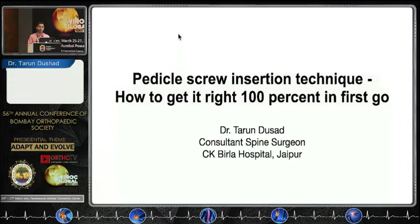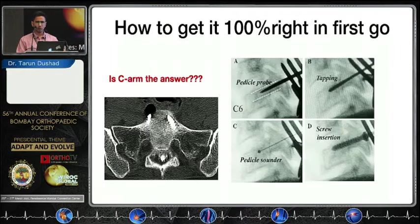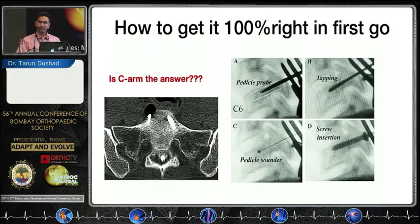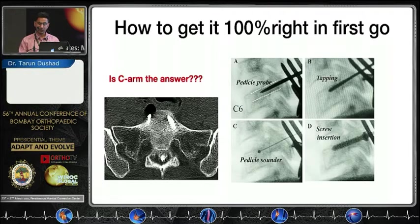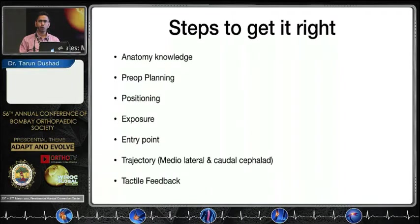Pedicle screw insertion technique: how to get it right 100% in the first go. Is C-arm (SIAM) the answer? Believe me, when SIAM shows you good AP and lateral view positions of pedicle screws, they can still lead to breach on the anterior aspect of the sacrum, just as shown in the CT image, which caused L5 radiculopathy. So SIAM is definitely not the answer.